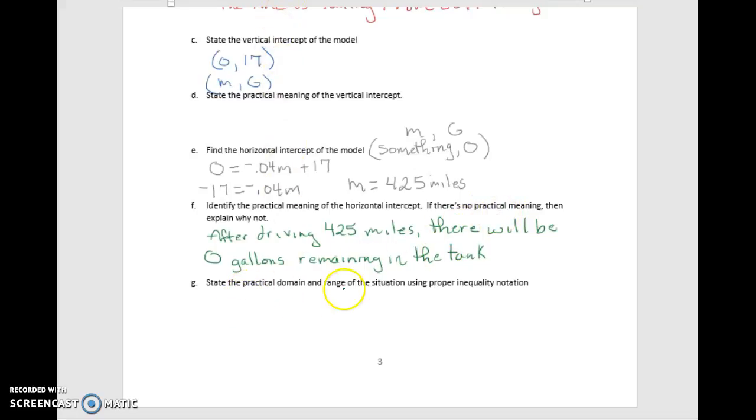Now the practical domain and the practical range, remember the domain is going to deal with your inputs. So these are the miles. And the range is going to deal with our outputs, which is the gallons. And so for our miles, the least amount of miles we could drive would be 0. We're going to include that variable. So 0 all the way up to, and including the most amount of miles that we can drive, which is 425 miles.